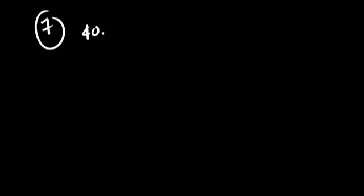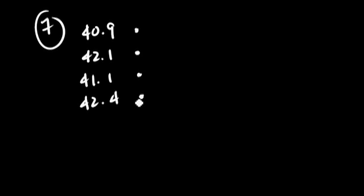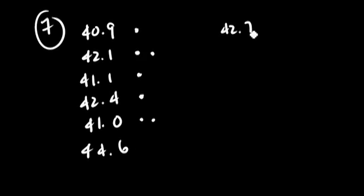Problem 7 is another example where I have to determine the mode. Since there are many data values, I'm going to keep track of each one. 40.9 shows up once, 42.1 shows up once, 41.1 shows up once, 42.4 shows up once, 41.0 shows up once. Then there are additional 41.0s, another 42.1, 44.6 appears for the first time, and 42.7 shows up once.